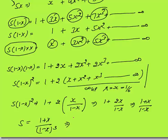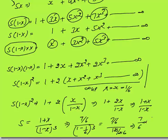Substituting x = 1/6: numerator = 1 + 1/6 = 7/6. Denominator = (1 - 1/6)³ = (5/6)³ = 125/216. So S = (7/6) ÷ (125/216) = (7/6) × (216/125) = 252/125. The final answer is 252/125.